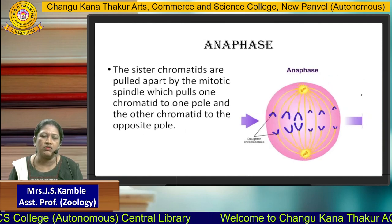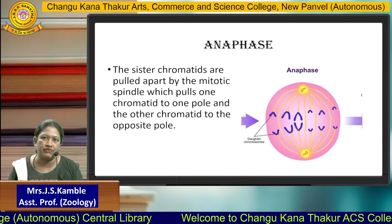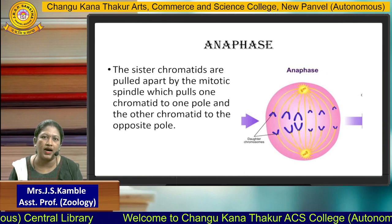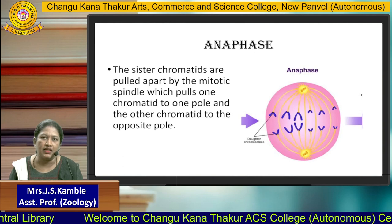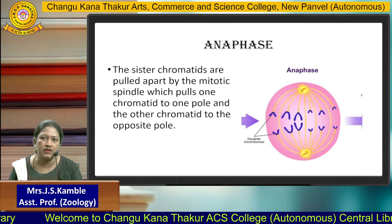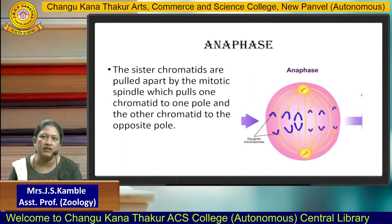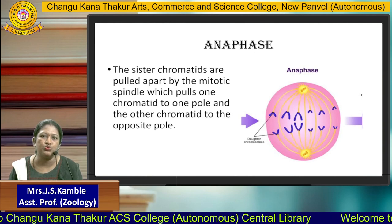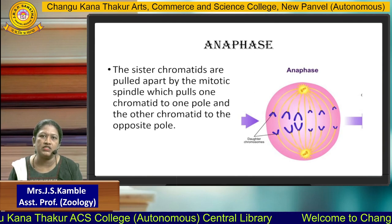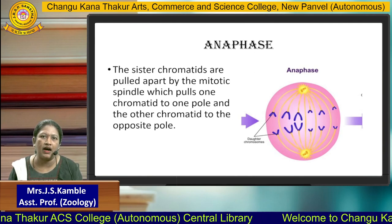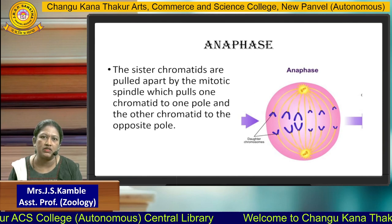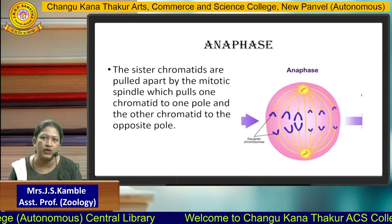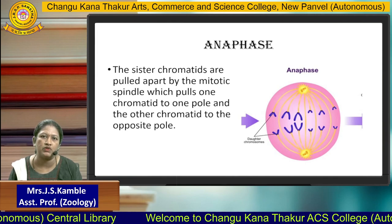The cell now goes into anaphase. The chromosomes at the equator are pulled by means of spindle fibers, with the help of the centriole, to their respective poles. The sister chromatids are pulled apart by the mitotic spindle, which pulls one chromatid to one pole and the other chromatid to the opposite pole.